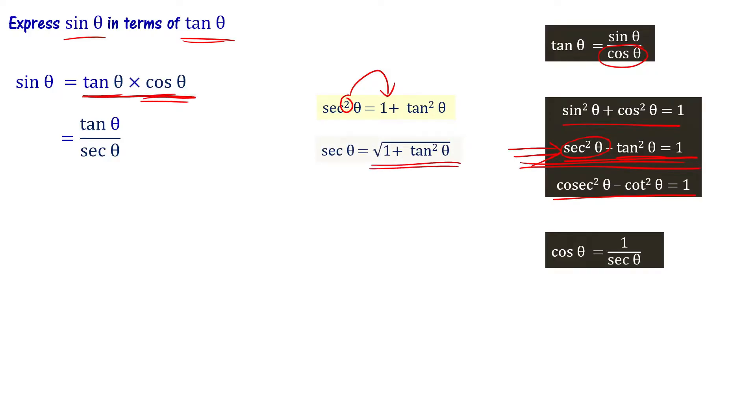Now substitute that in the place of sec theta here. So we get tan theta divided by square root of 1 plus tan square theta. This is what we are asked to write.